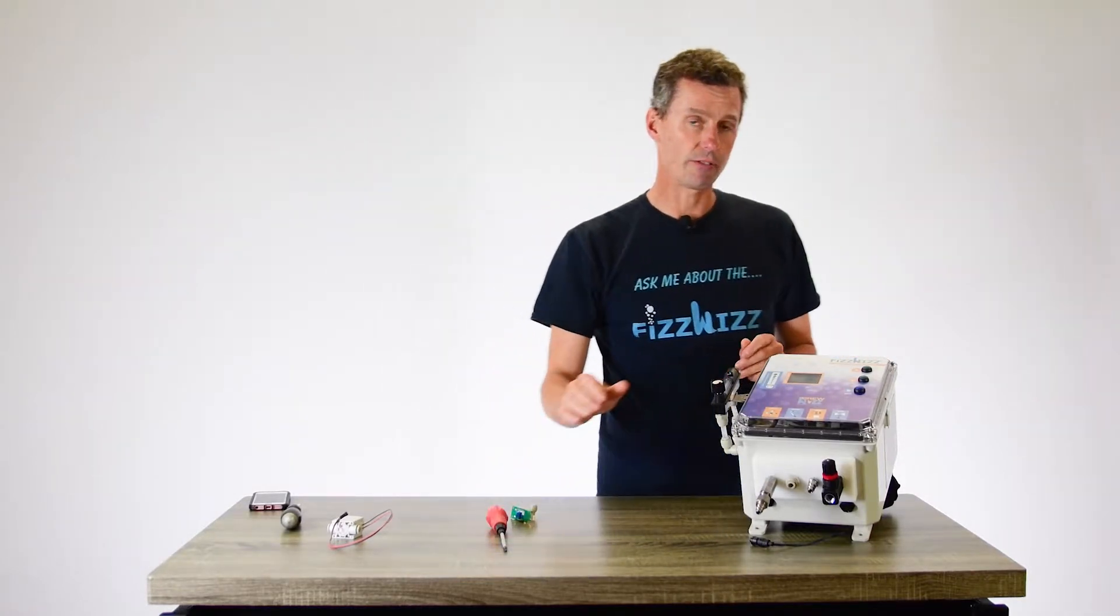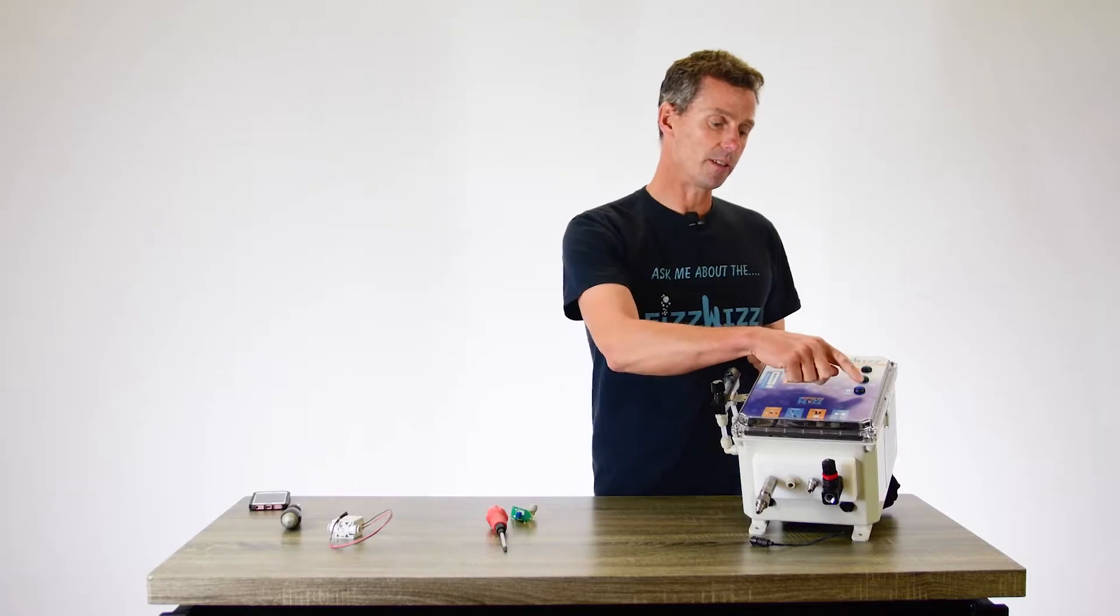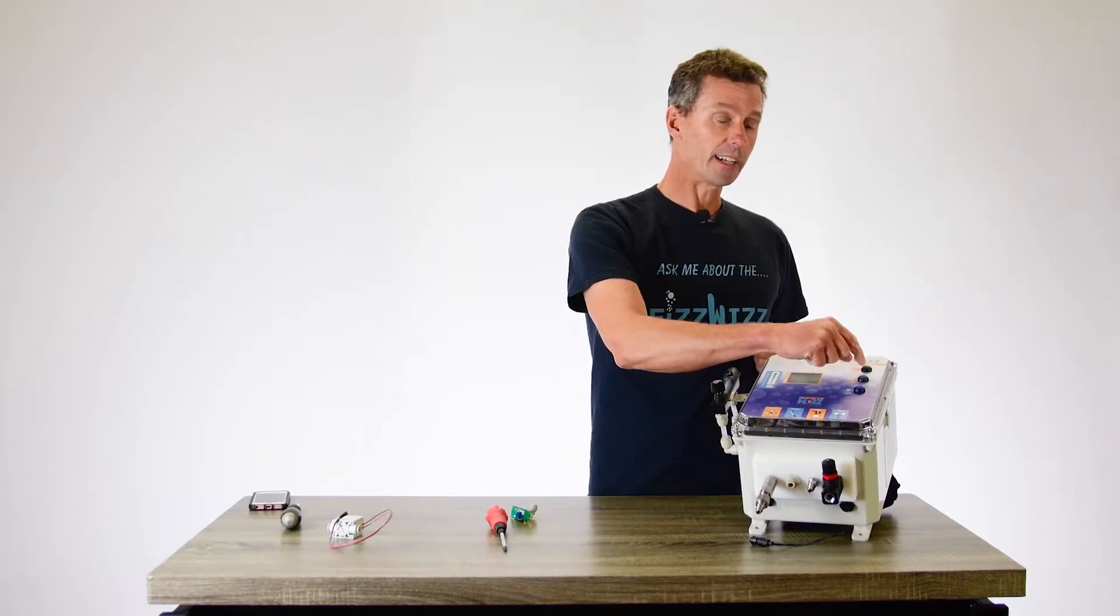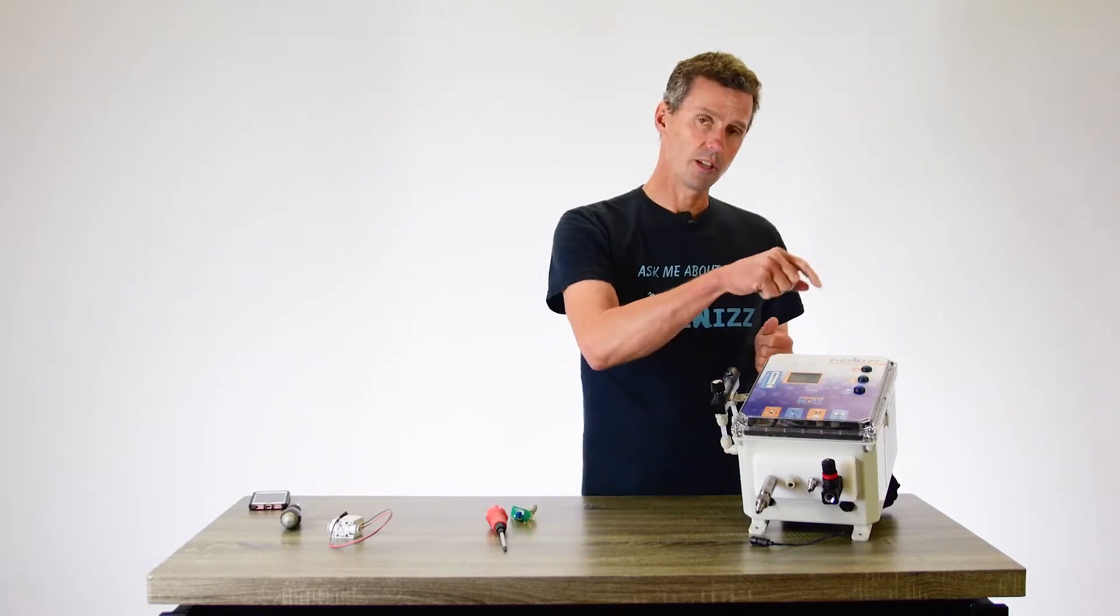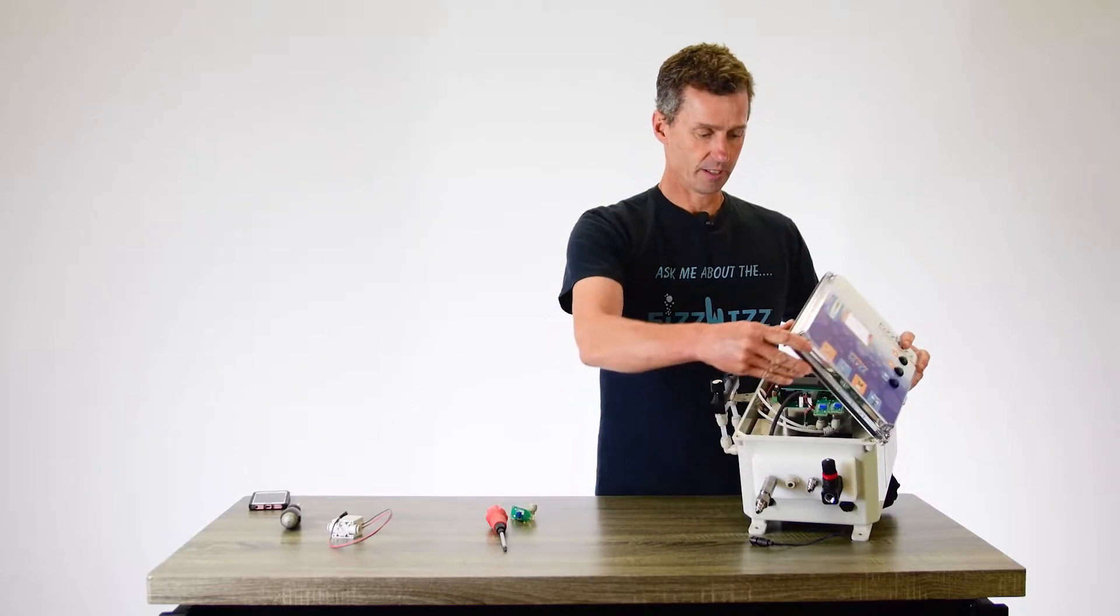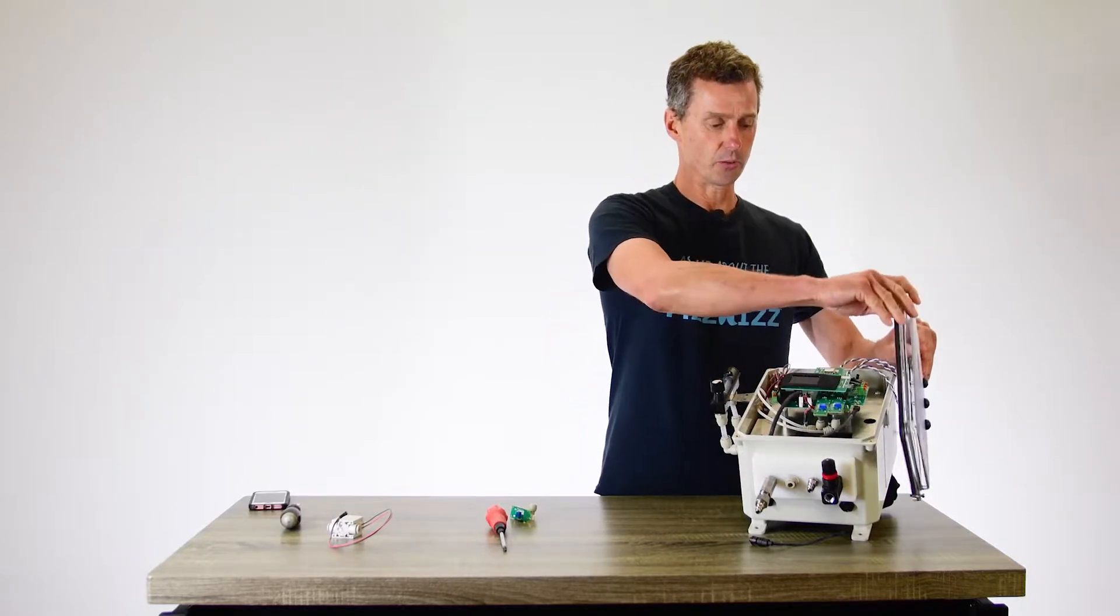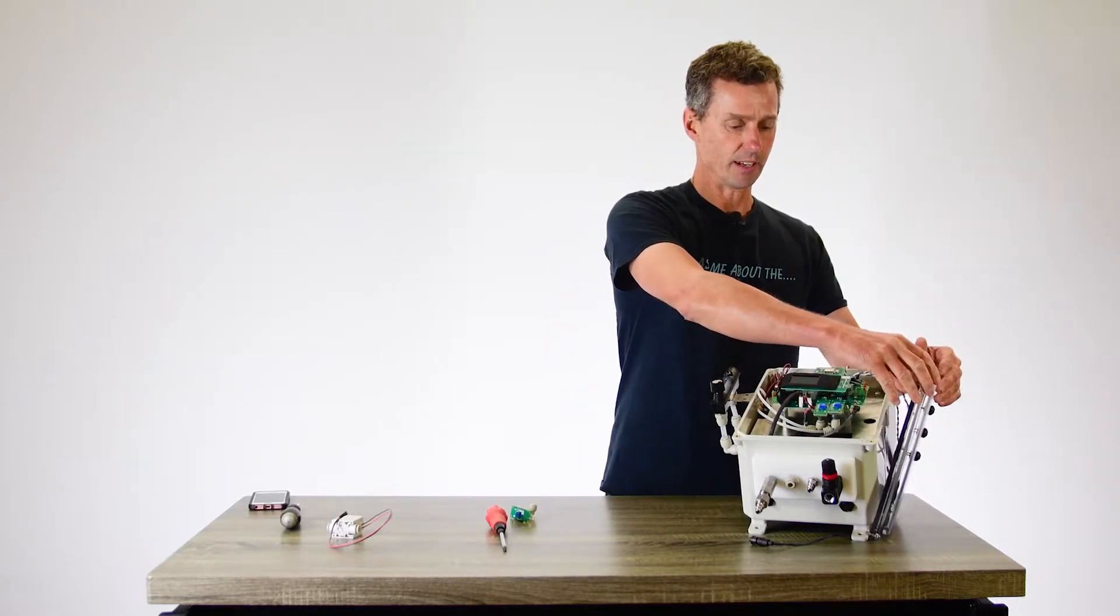Now when you take the lid off, the only thing you have to be careful about is that these buttons are connected to the printed circuit board below the lid. We can just drop that down to the side there like that.